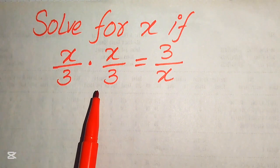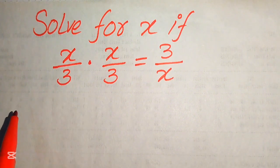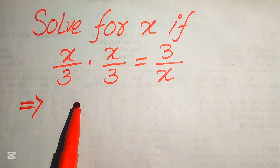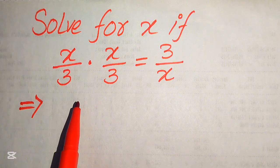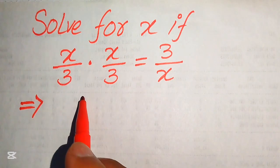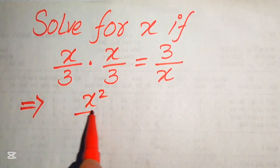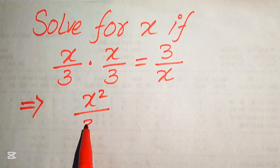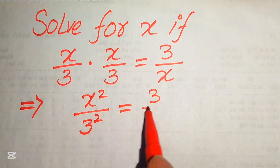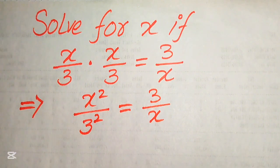These two fractional terms are multiplied by each other, so we multiply numerator with numerator and denominator with denominator. We get x times x, which becomes x squared, and 3 times 3, which becomes 3 squared, so this gives us x²/9 equals 3/x.